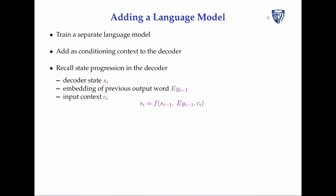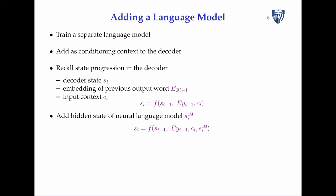Recall state progression in the decoder. We have a decoder state, an embedding of the previous word, and the input context — this was state progression in the recurrent neural network. We compute the next state given the previous state and the last word produced. The idea is we also have a language model state that observes the language model sequence and provides preferences about what the next word should be. This can be used as an additional input when computing the next state to make the prediction about what the next word should be.